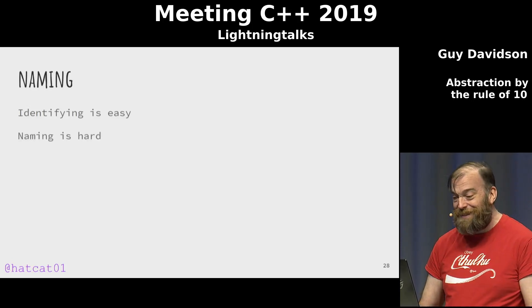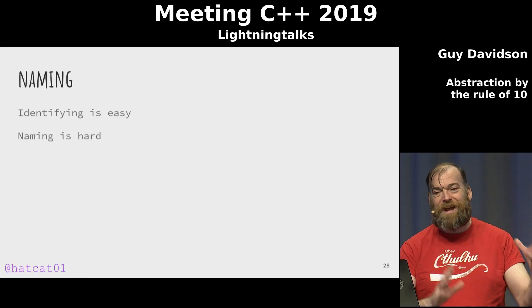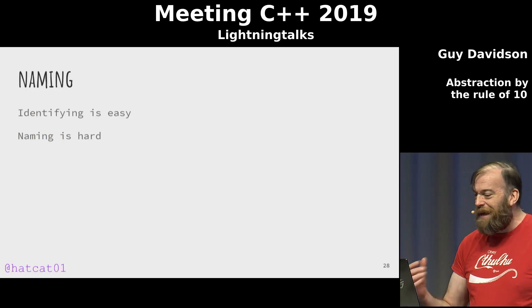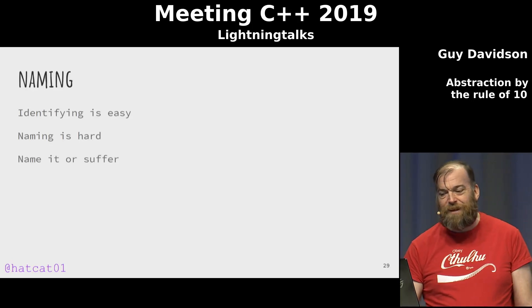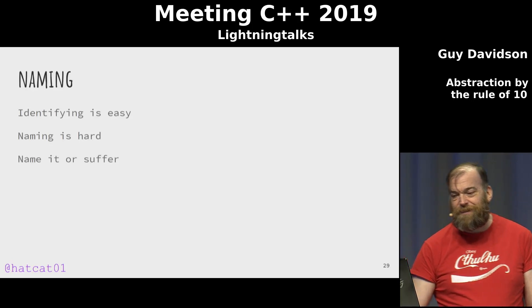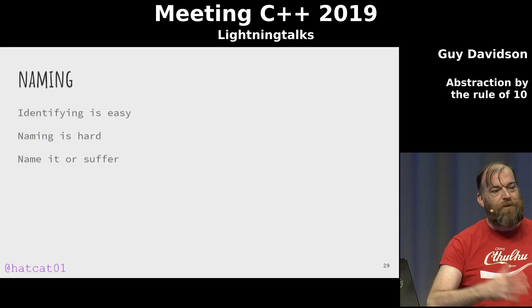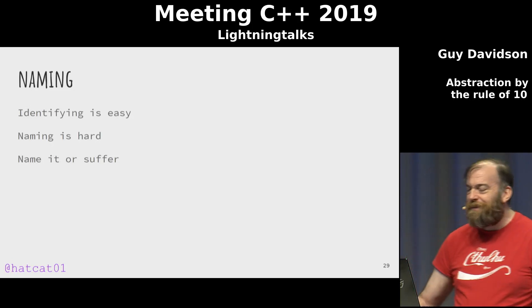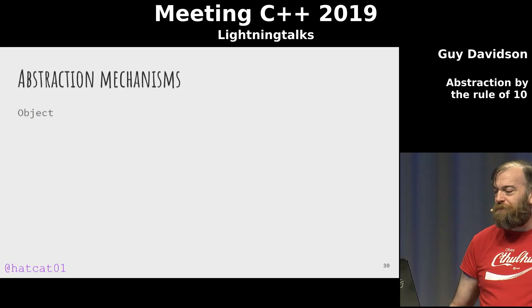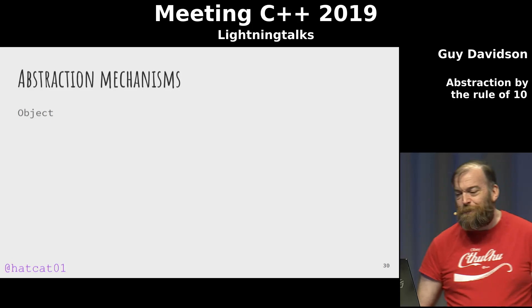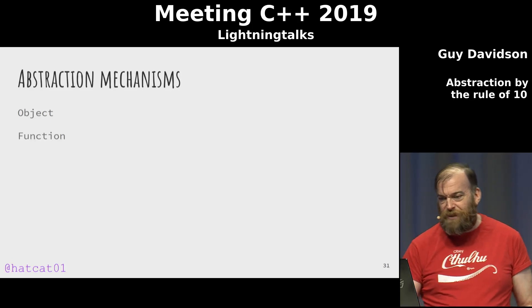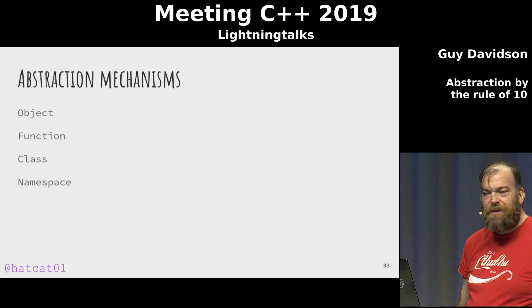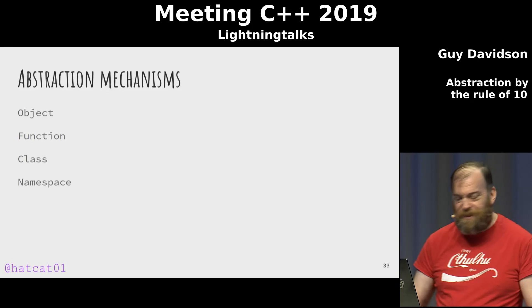Identifying is easy, naming is hard — but we need to find a name for these things, or we will end up with a giant and incomprehensible interface. More than 10 functions in your API? Too big. Divide it. Give it two new names. So we have three abstraction mechanisms so far: the object, the function, the class. The namespace is the next one to think about.